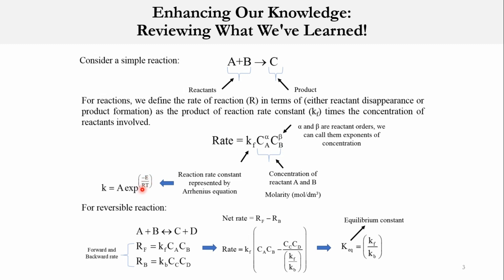K is the rate constant, E is the activation energy, R is the ideal gas constant, and T is the absolute temperature. While CA and CB represent the concentration of species A and B, the units are moles per cubic decimeter. And alpha and beta are the reactant orders. We can call them exponents of concentration. And once we sum these, we get the total or overall order of the reaction.